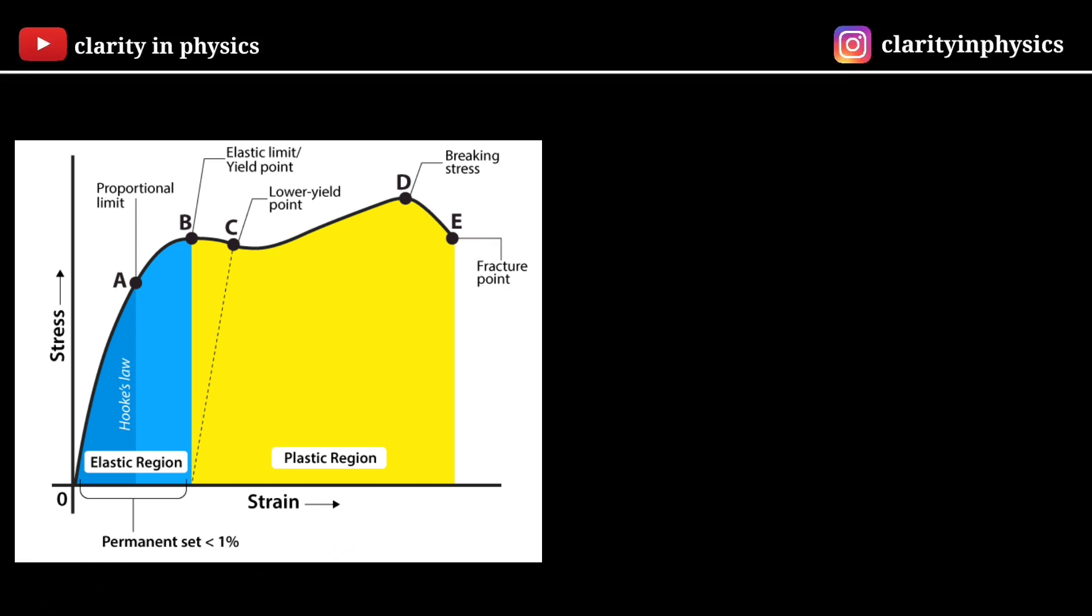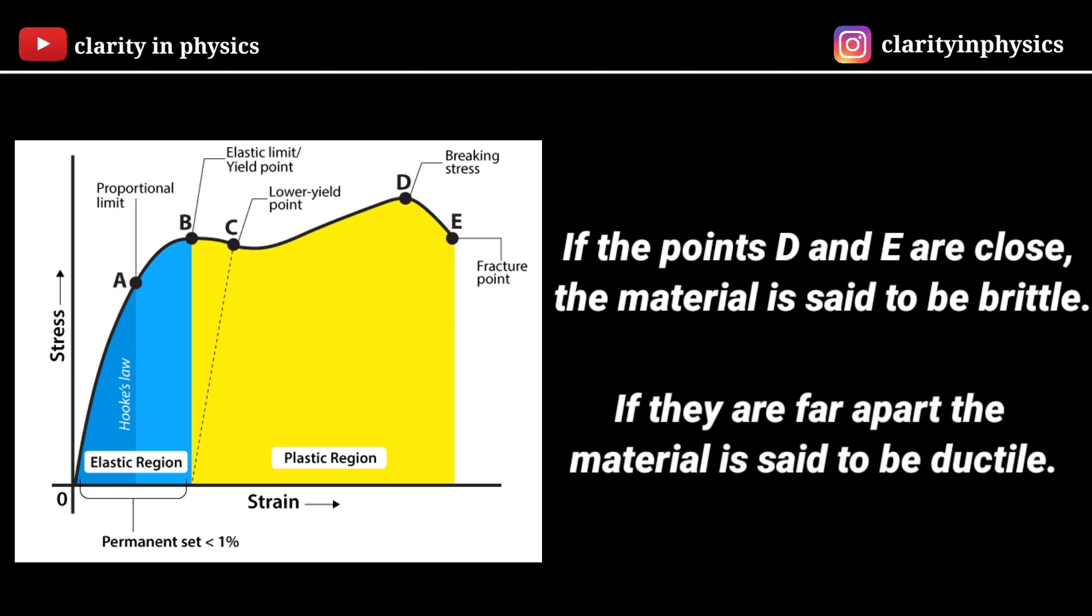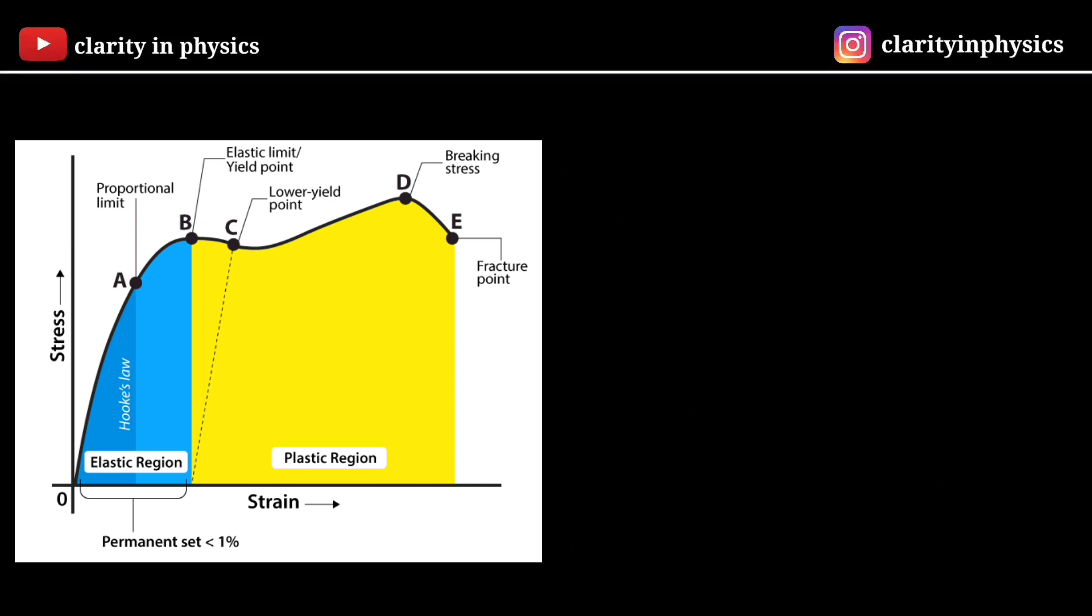If the ultimate strength and fracture points D and E are close, the material is said to be brittle. If they are far apart, the material is said to be ductile. The region B, C, D, E represents the plastic behavior of the material of the spring.